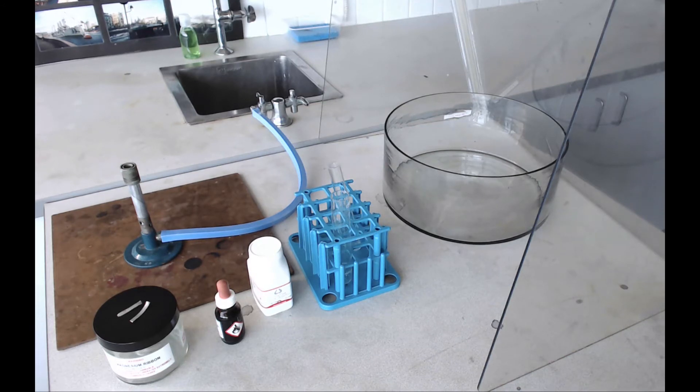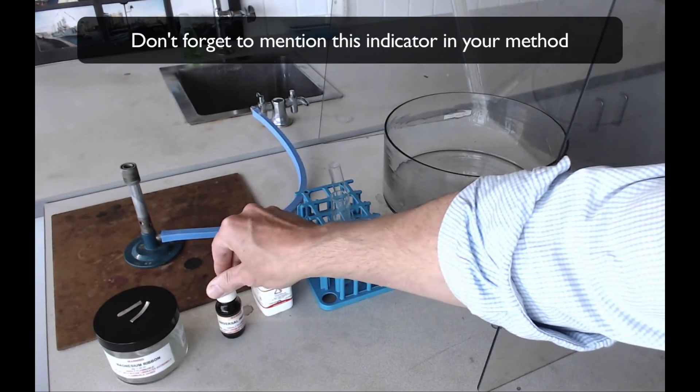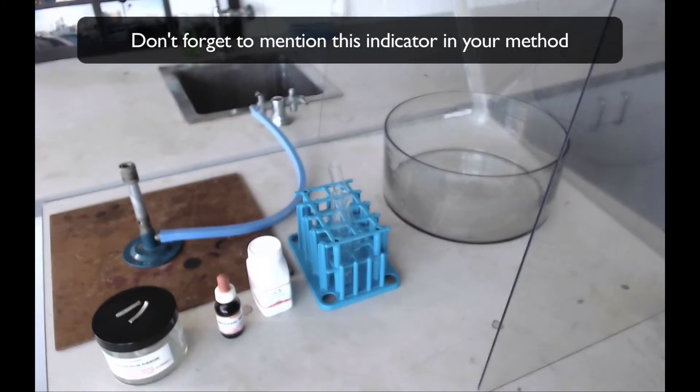The test with all three of these group one metals is the same. The trough will be about half full of water, the metals will be dropped into the water, we'll observe how they react, and once the reaction is finished, we'll put a bit of this universal indicator in to see what's happened to the water after the reaction.